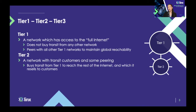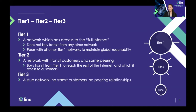A Tier 2 network is a network that generally buys transit from a Tier 1 provider and it might also be selling on some of that transit to smaller networks. It might also have some peering arrangements where it exchanges traffic with other networks for free and for the mutual benefits of both parties. And a Tier 3 network is generally used for a network that is simply connected through one single connection to the internet.